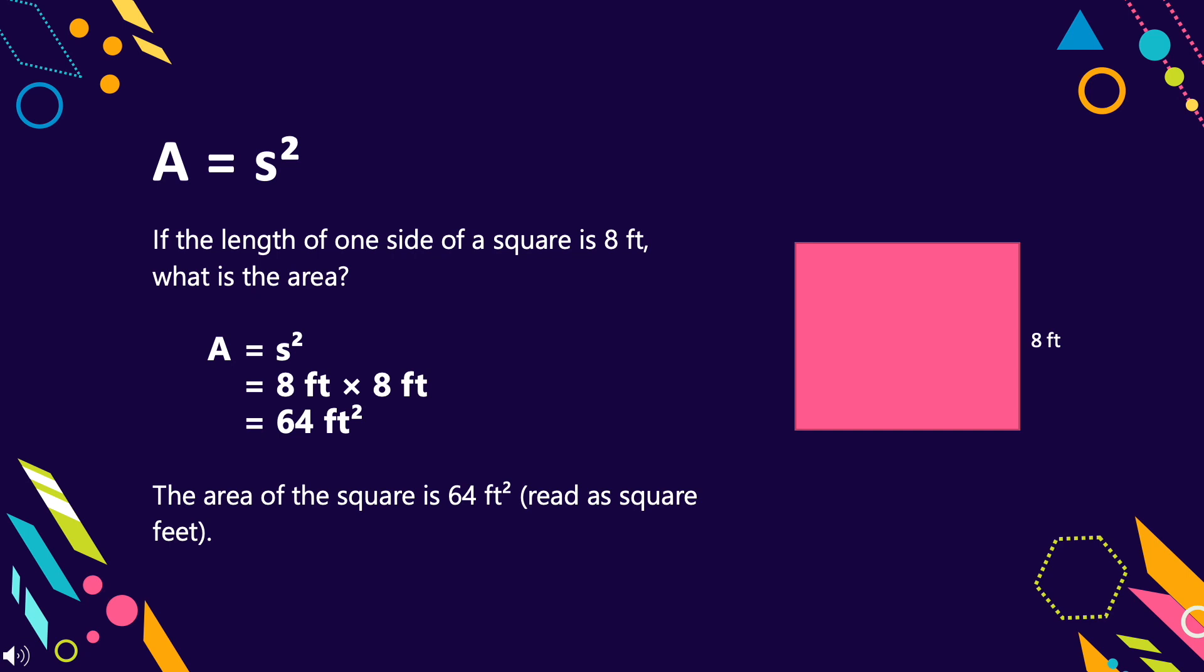If the length of one side of a square is 8 feet, what is the area? Here is our solution. A equals S squared equals 8 feet times 8 feet equals 64 square feet. Therefore, the area of the square is 64 square feet.